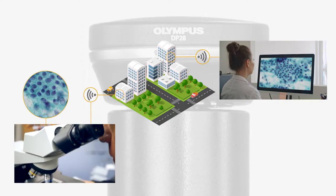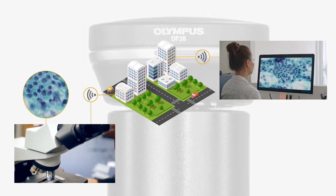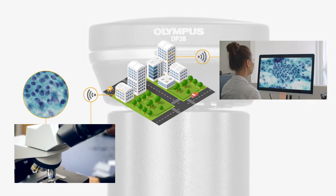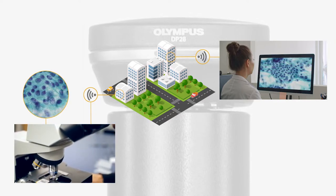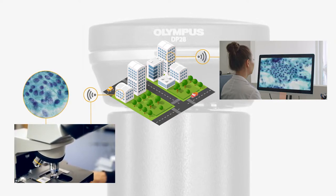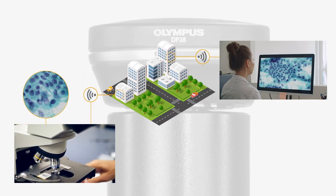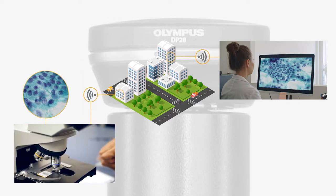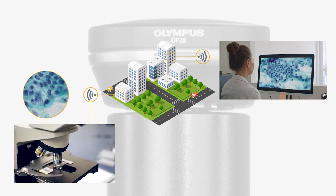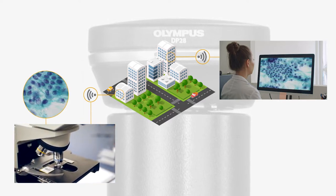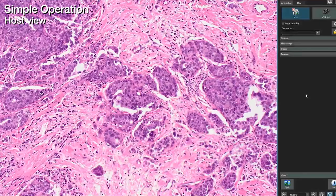The network solution makes it simple to connect DP28 and DP23 cameras to the network so that you can share live or captured images in real-time using a web browser. All you need is an optional network solution license. The network solution is simple and easy to use.